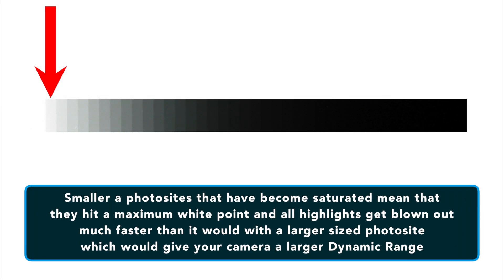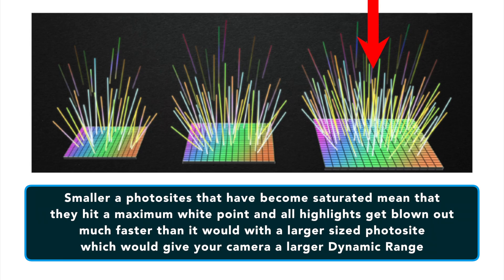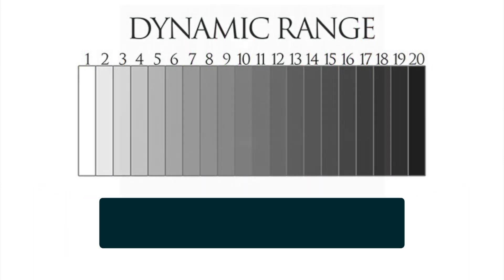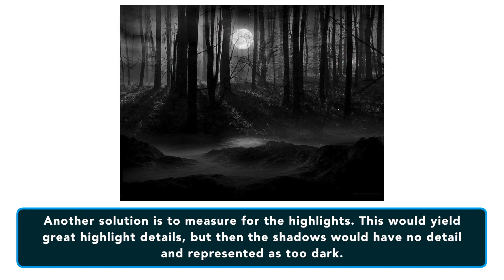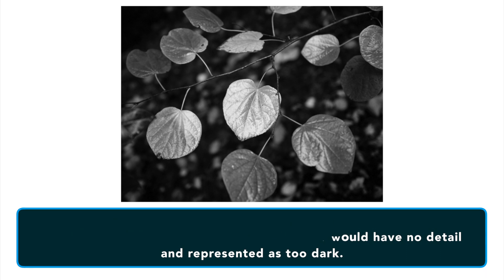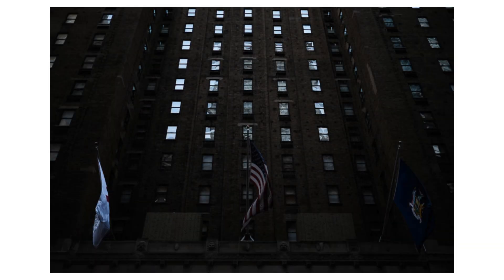This means that it hits a white point and all the highlights get blown out much faster than it would with a larger size photosite, which would give your camera a larger dynamic range. Another solution would be to measure for the highlights — we would have greater highlight details, but then our shadows will have no detail at all and be represented as too dark or even black. In pictures, we'd call that being muddy, meaning there's not enough light in the dark sections. With that, let's take a look at tonal range.